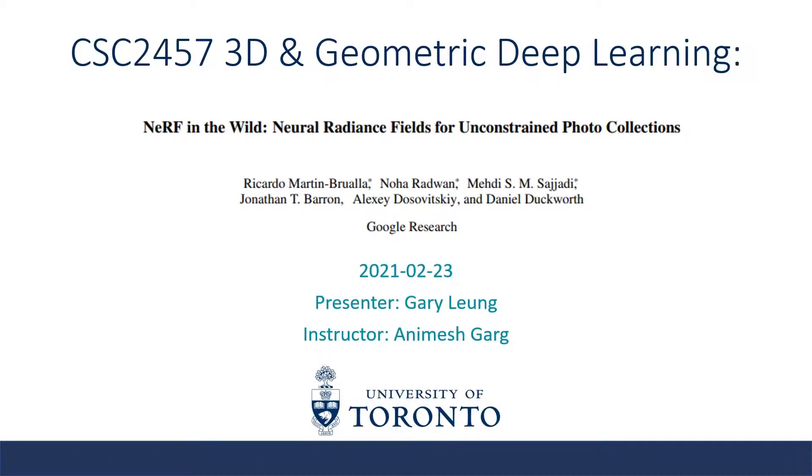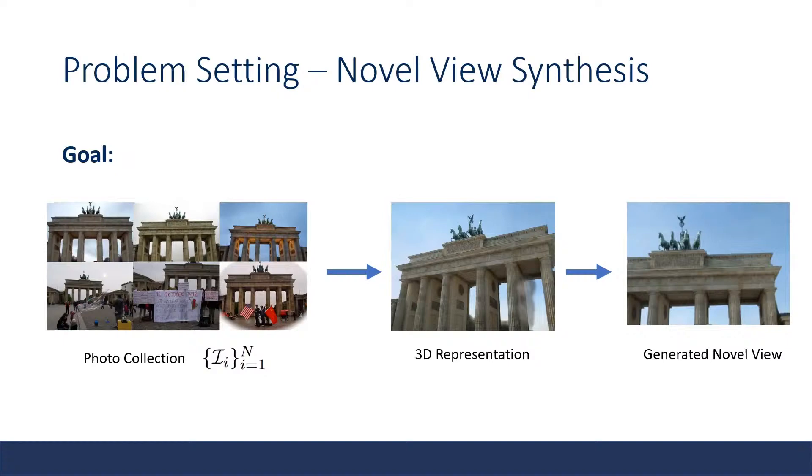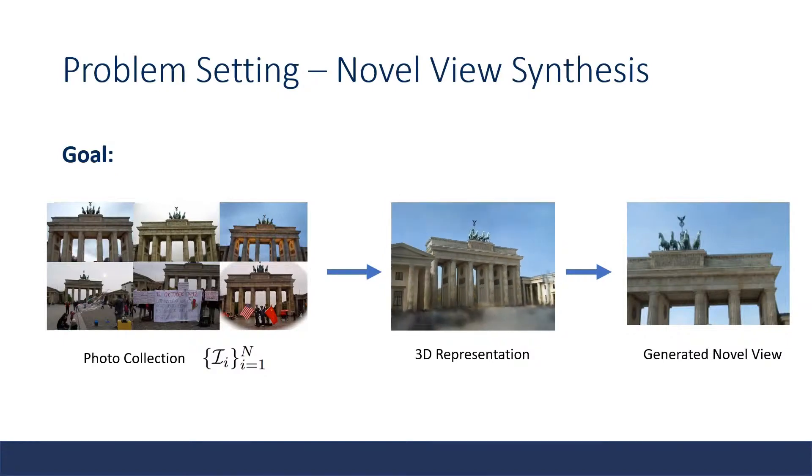Hello, my name is Gary and I will be presenting NeRF in the Wild: Neural Radiance Fields for Unconstrained Photo Collections. Novel view synthesis is a task in which you are given a sparse set of images for an object. Given this image collection, you want to learn a representation that can synthesize new views of the object. This is a long-standing problem with many applications in AR and VR.